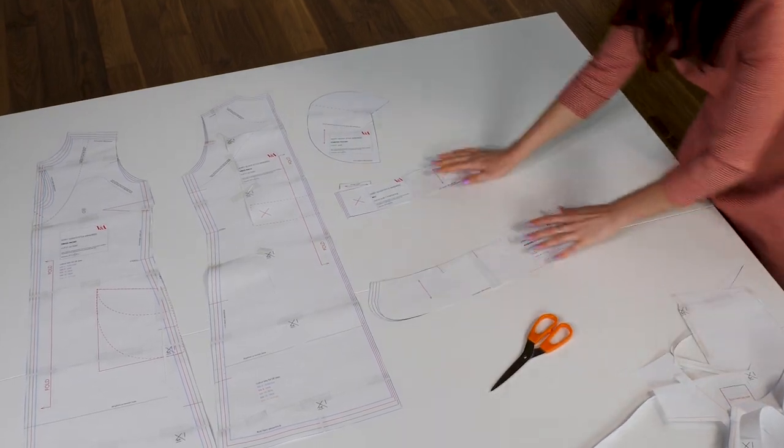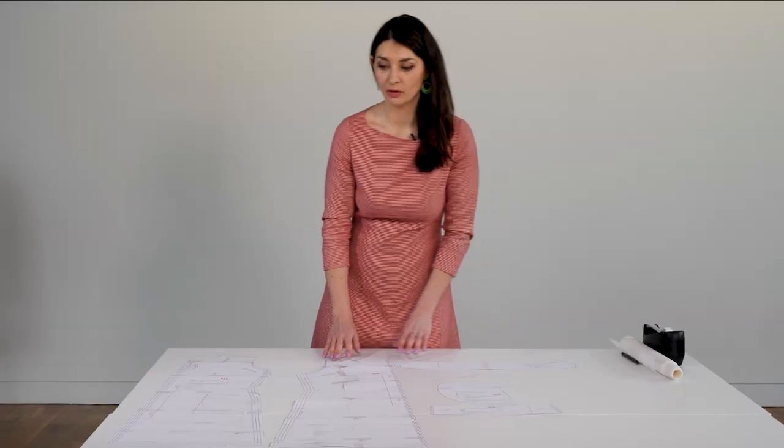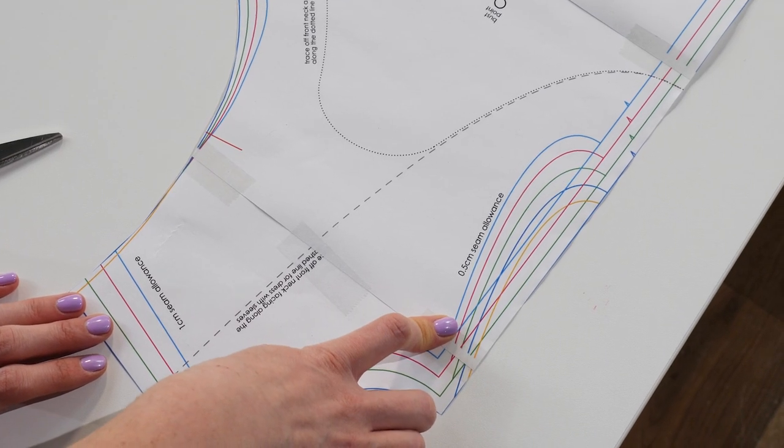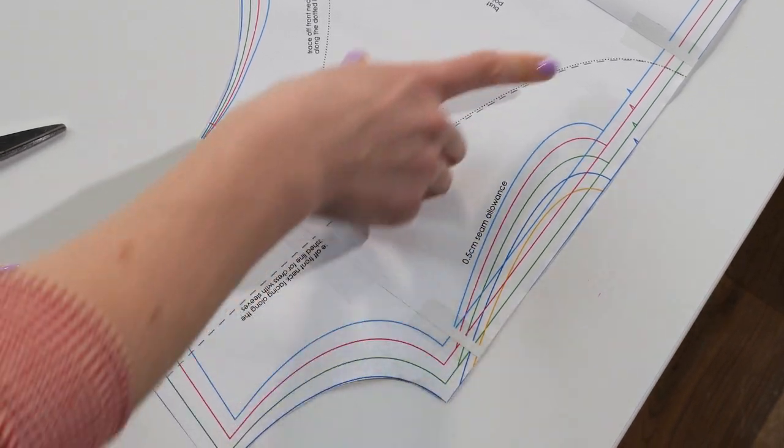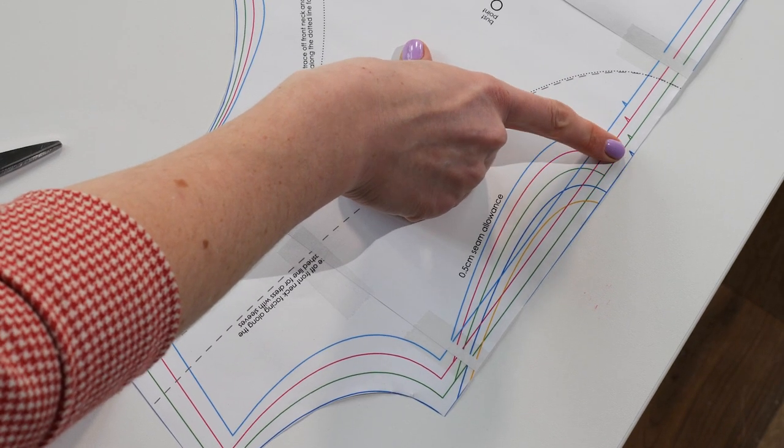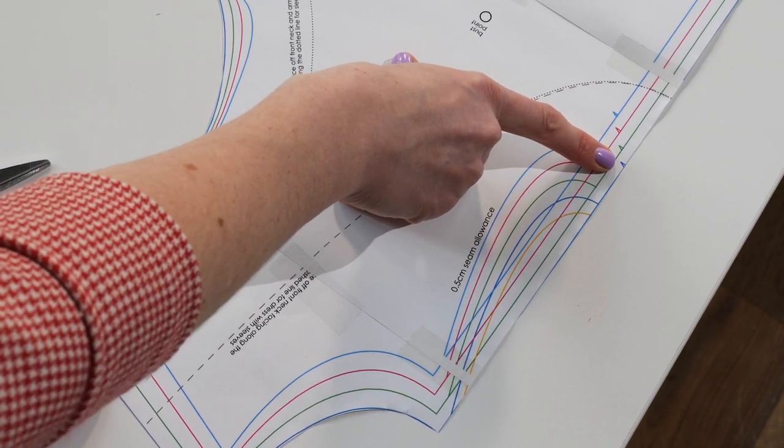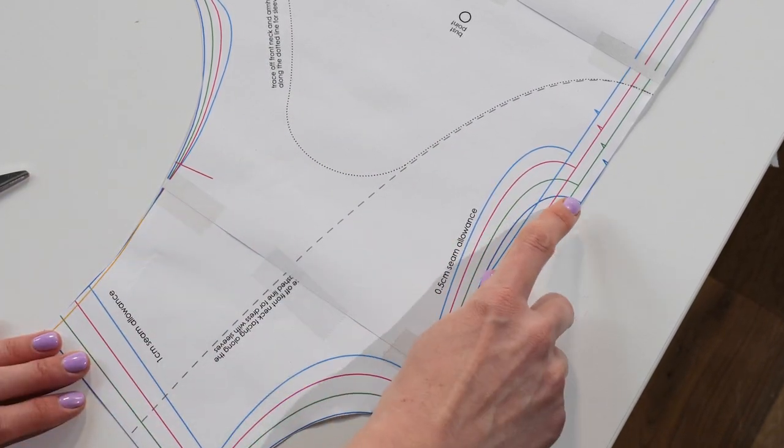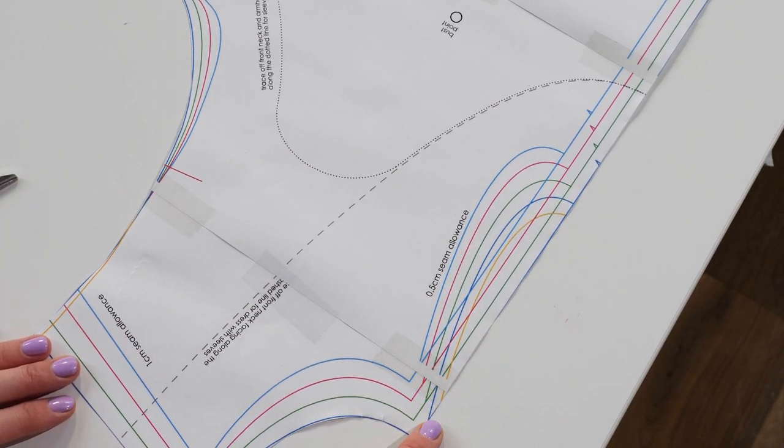Okay so now I have all the pieces cut out that I need to make the dress. I just need to pay attention here to the two different neckline options on the dress. So you'll see that there's some triangular markers here and those would be for if I was making a zip front version but because I'm going to make the keyhole I want to cut out this curved line here.